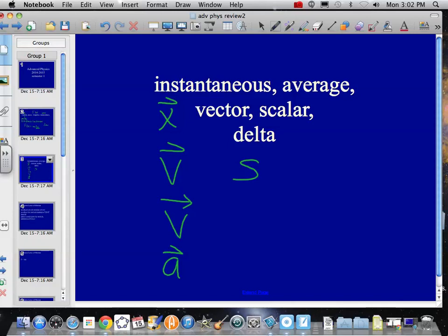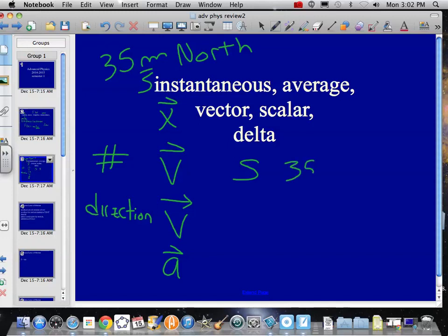And a vector concept is something that not only has a number, it also has a direction. 35 meters per second north, as opposed to just plain old 35 meters per second. Direction is a vector. Without a direction, it is a scalar. Scalar just means it's got a scalar.